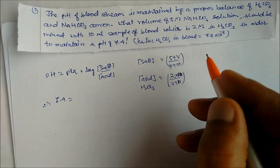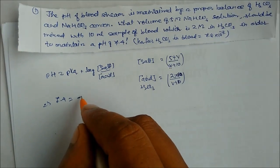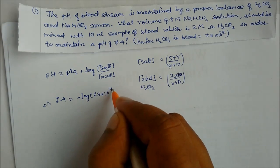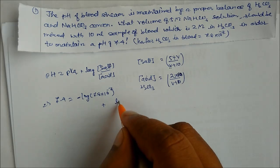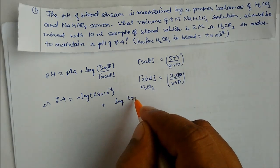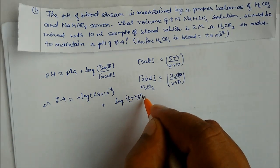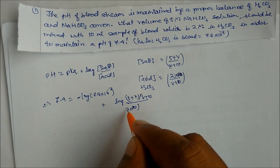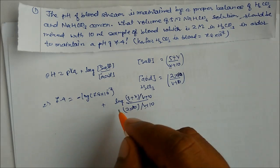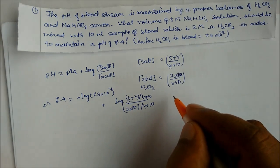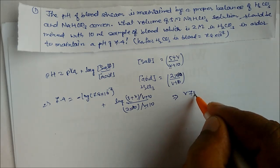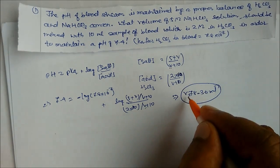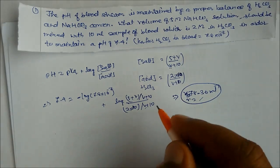So we write pKa = −log(7.8×10⁻⁷), plus log of salt over acid, where salt = 5V/(V+10) and acid = 2×10/(V+10). The (V+10) terms cancel. Solving the equation, V = 78.36 mL. This is our answer.